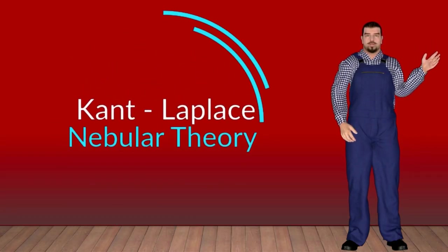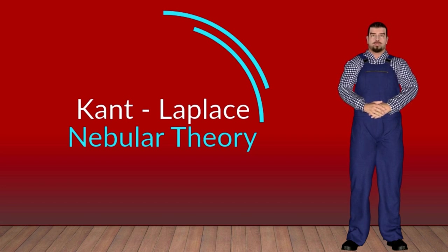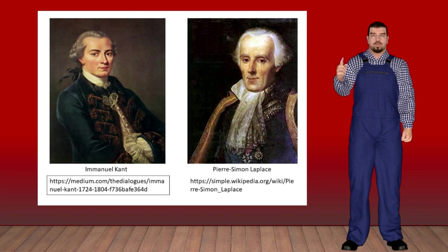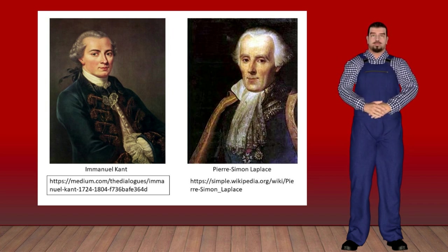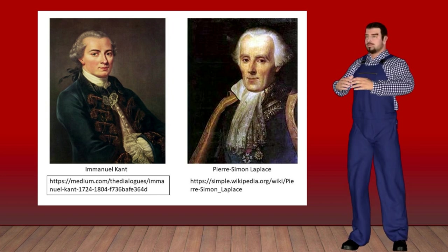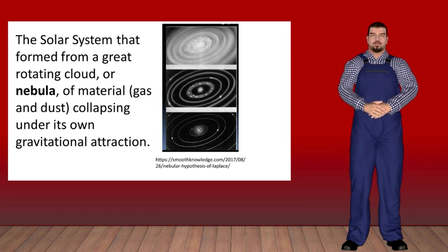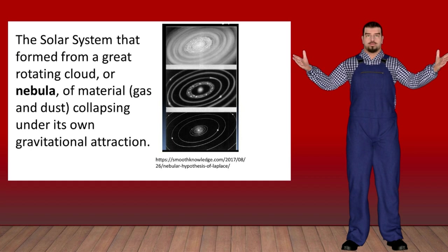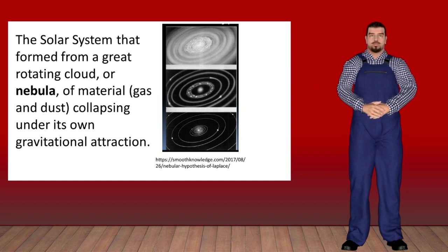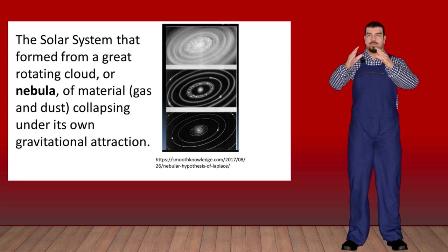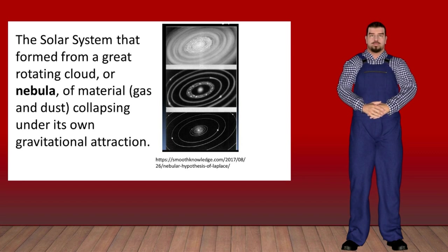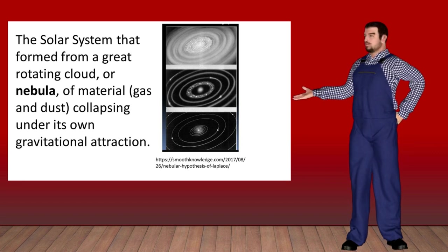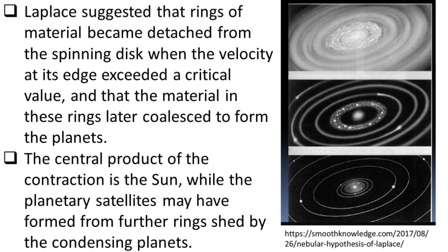The Kant-Laplace Nebular Theory: according to the encyclopedia, a theory for the origin of the solar system was put forward by French mathematician Pierre-Simon de Laplace in 1796 and similar to a suggestion of philosopher Immanuel Kant in 1755. It was proposed that the solar system, including the sun and other planets, were formed from a great rotating cloud or nebula of material, gas, and dust collapsing under its own gravitational attraction. An interaction of forces caused the cloud to form a rotating flattened disk called the solar nebula. To conserve angular momentum, the disk rotated more rapidly as the contraction progressed. Laplace suggested that rings of material became detached from the spinning disk when the velocity at its edge exceeded a critical value, and that the material in these rings later coalesced to form the planets.